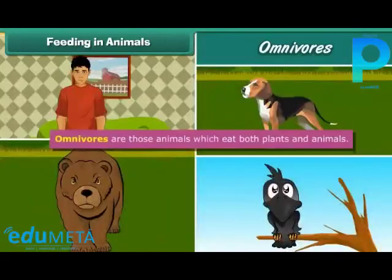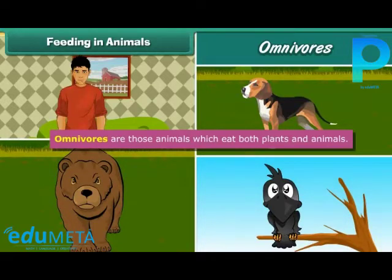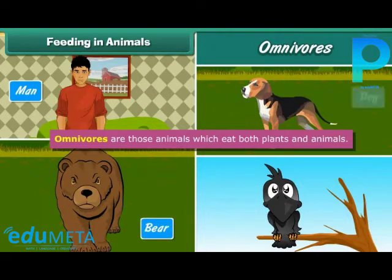Omnivorous are those animals which eat both plants and animals. Examples include man, bears, dog, and crow.